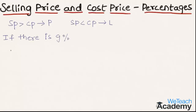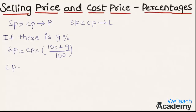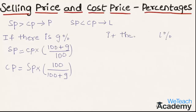To find the selling price when gain is given, the formula is: Selling Price = Cost Price × (100 + Gain%) ÷ 100. Similarly, to find the cost price, the formula is: Cost Price = Selling Price × 100 ÷ (100 + Gain%).